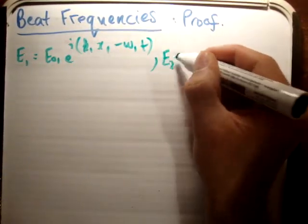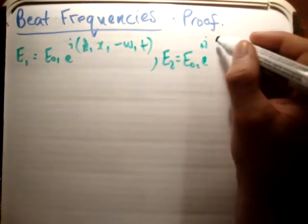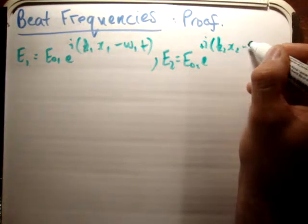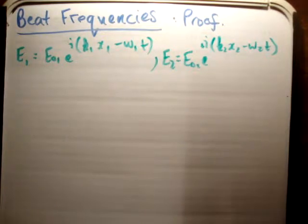And then we have similarly E2 is equal to E02 times the complex exponential, positive complex exponential of K2 X2 minus omega 2 T. And what we want to do here is add them.